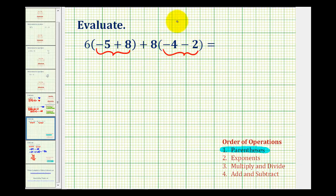And again, if we need to, we can rewrite this as negative 4 plus negative 2 to help us determine the difference. So we're going to have 6 times negative 5 plus 8.